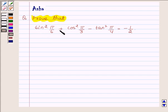sin square π upon 6 plus cos square π upon 3 minus tan square π upon 4 is equal to minus half.